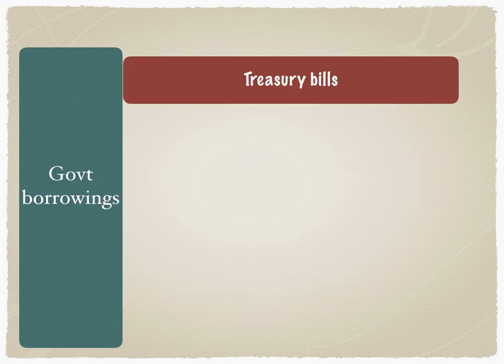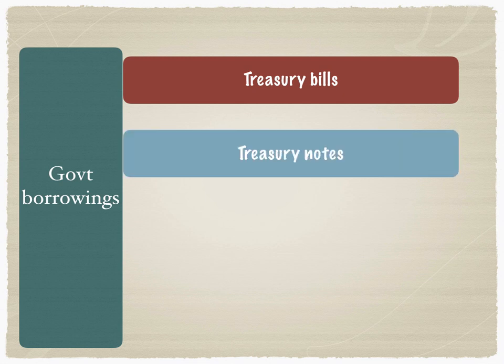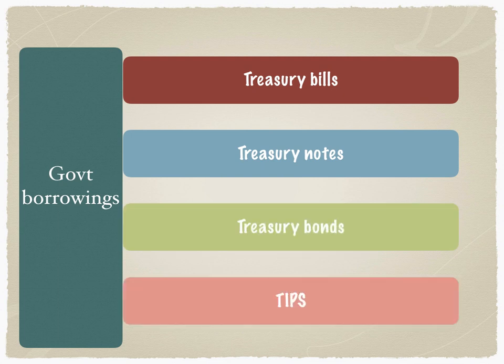Government borrowings of the United States are classified as treasury bills, treasury notes, treasury bonds, and TIPS — or Treasury Inflation Protective Securities. When we use the word treasury, it means that the borrower is the federal government. So we are not discussing corporate borrowings here; we are discussing the borrowings of the federal government.